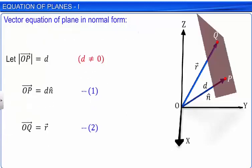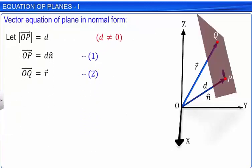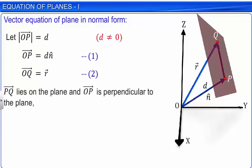Let us draw vector PQ. Vector PQ lies on the plane and vector OP is perpendicular to the plane, which implies that vector OP is perpendicular to vector PQ. Since vector OP is perpendicular to vector PQ, their dot product is equal to zero. Let this be equation 3.